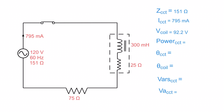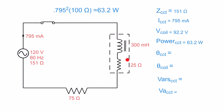Now we figure out the true power of the entire circuit — the power dissipated across both resistors. Adding 75 ohms and 25 ohms gives 100 ohms total resistance. Using I²R: 0.795 squared, times 100 ohms, gives 63.2 watts of power being dissipated. This is only across the resistive elements — watts are only dissipated across resistance, not across inductance.